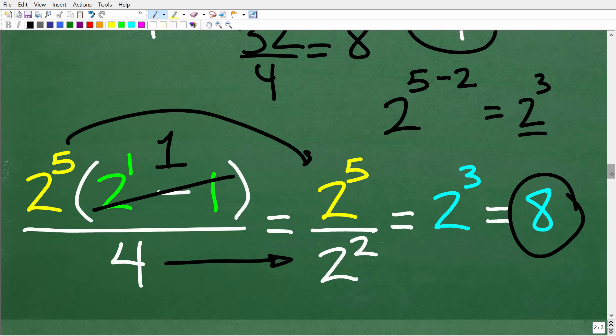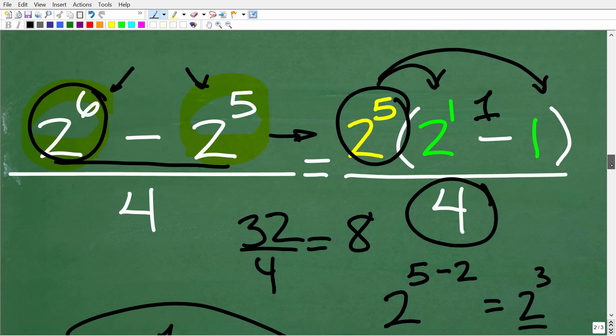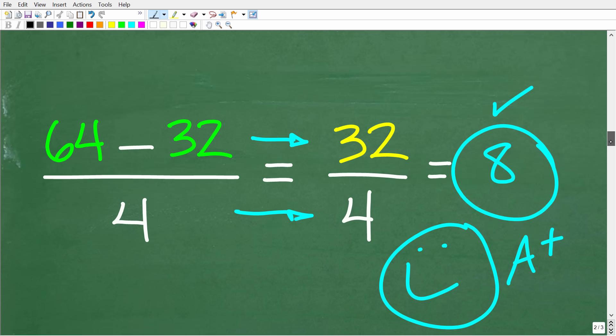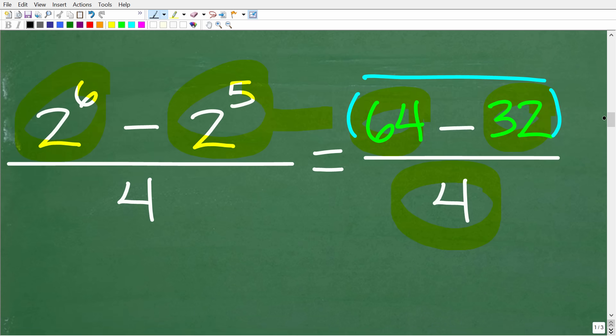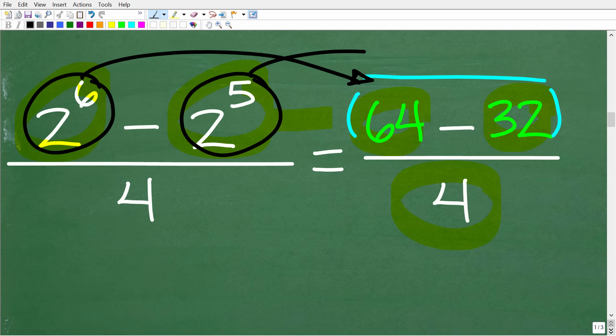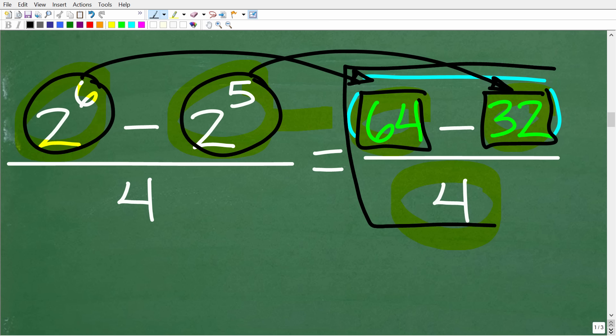All right, so a lot of different ways to approach this problem, and it all depends on your skill level. But one way that you should have been able to do this problem if you have basic understanding of powers and exponents is simply to evaluate these powers and recognize that we are dealing with numeric values. So if you figured out that 2 to the 6th is 64 and 2 to the 5th is 32, here we have a simple numeric expression. Now if you need help with powers and exponents or basic math, make sure to check out the courses in the description of this video.